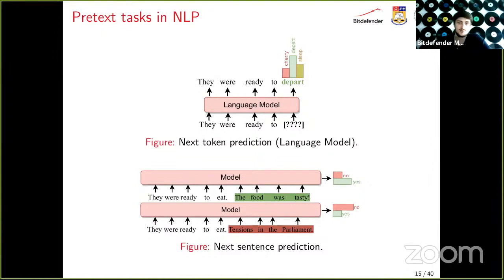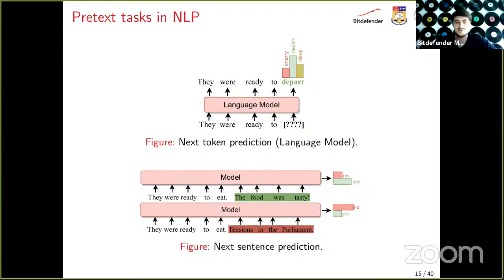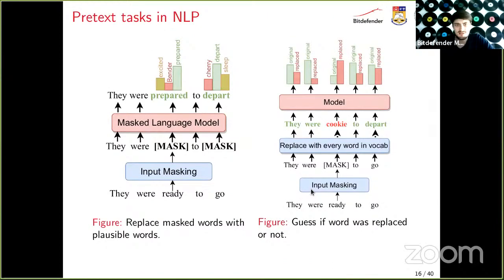Another task is next sentence prediction: given 'they were ready to eat,' the model should tell us that 'the food was tasty' is a good continuation, while 'tensions in the parliament' is not.